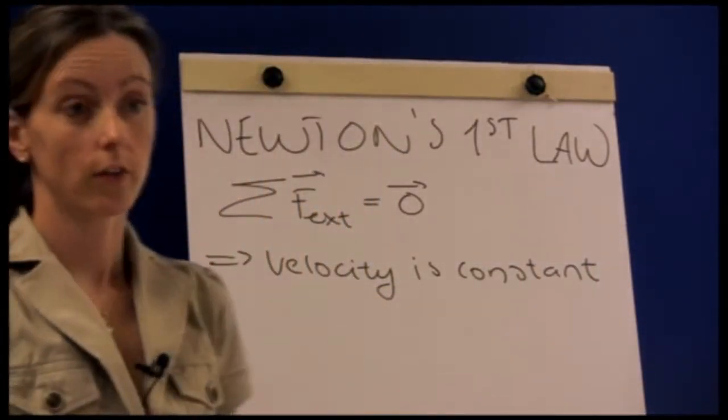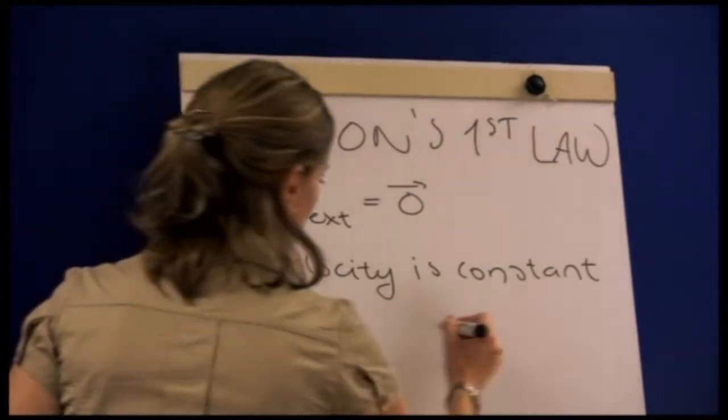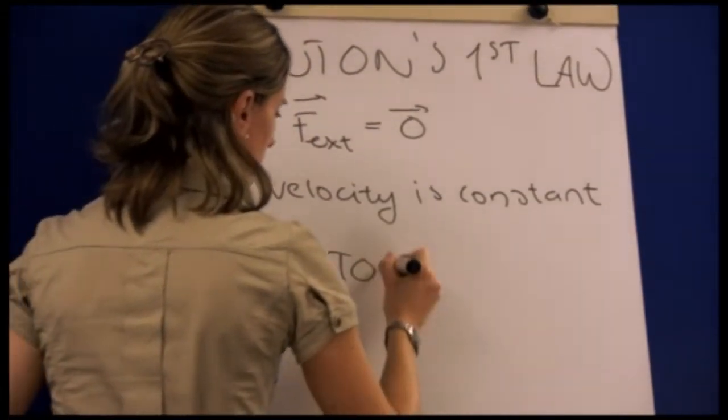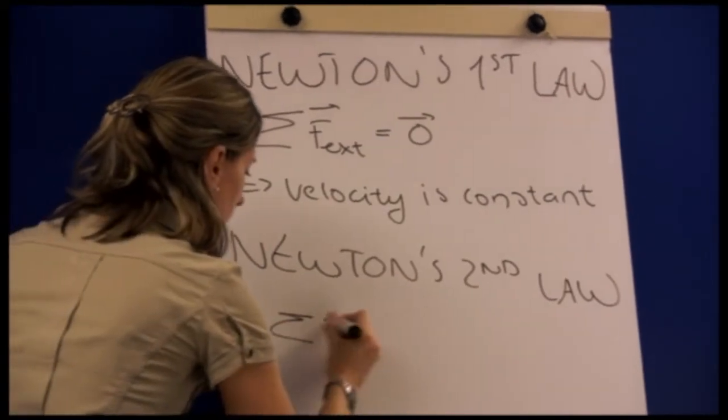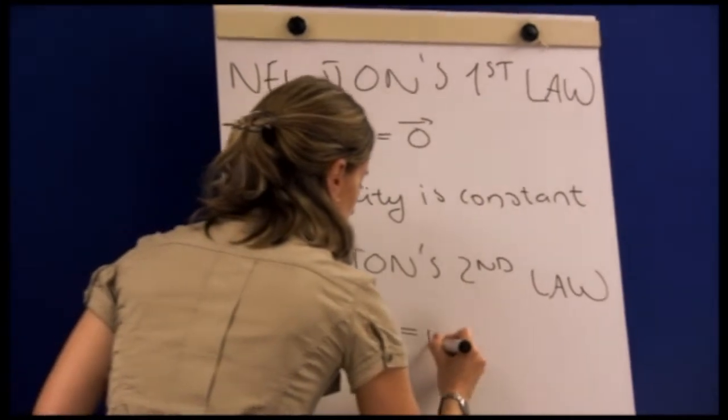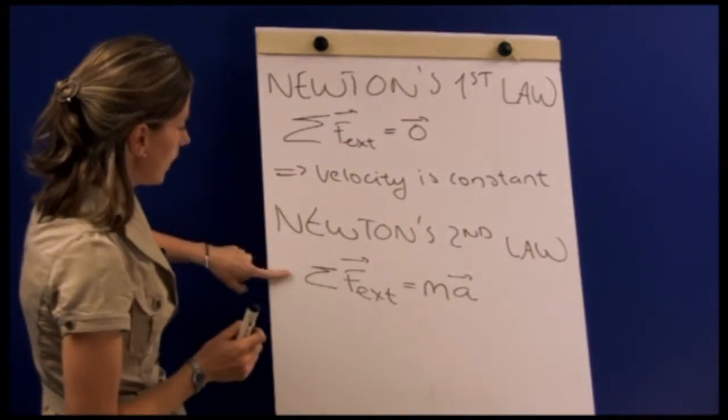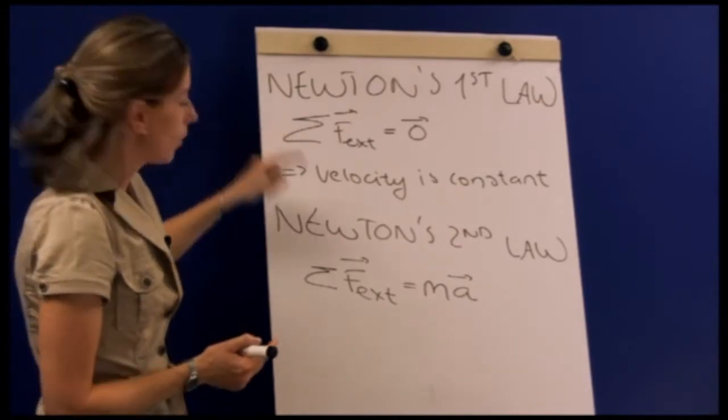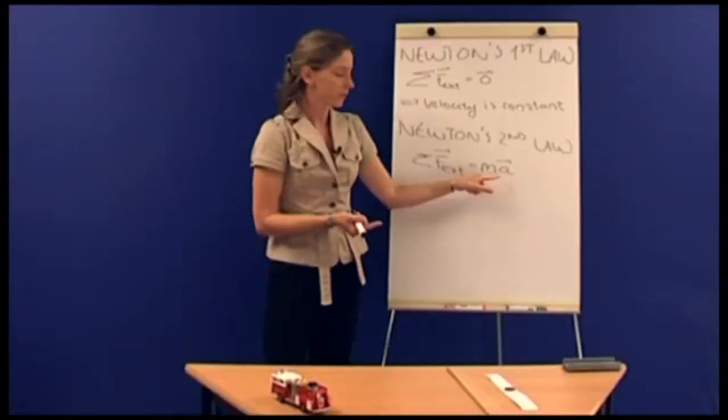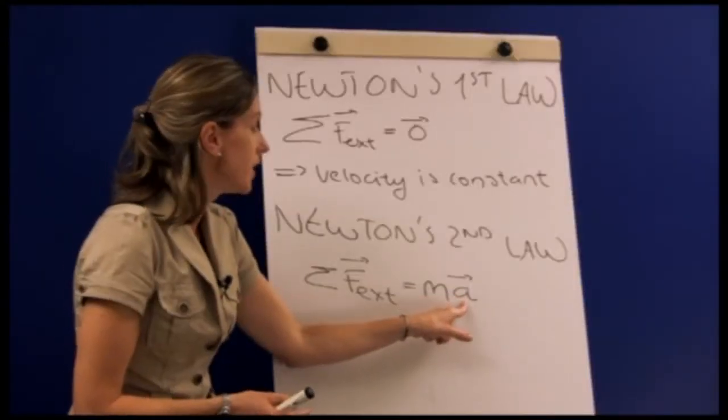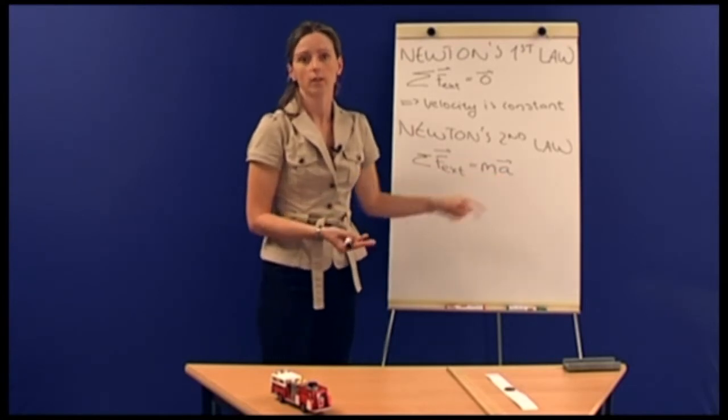Okay, so Newton's first law can be derived from a law that you know very well, and that's Newton's second law, which states that the sum of external forces is equal to the mass of the object times the acceleration. And this law here, we can use that to derive the first law. So if the sum of external forces is equal to zero, that means that the acceleration must be equal to zero, as long as the mass is not zero. So if the acceleration is zero, that means the velocity is constant, as the acceleration is equal to the derivative of the velocity.